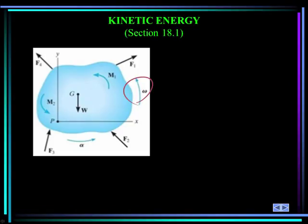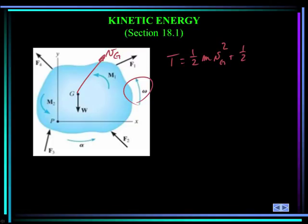Here in blue you see a rigid body. It has some rotational velocity and the mass center has some velocity. The kinetic energy of this body is one-half the mass of the body times the velocity of the mass center squared, plus one-half the mass moment of inertia about the mass center times omega squared. The first term is familiar from particle kinetics; the second is the kinetic energy due to rotation.